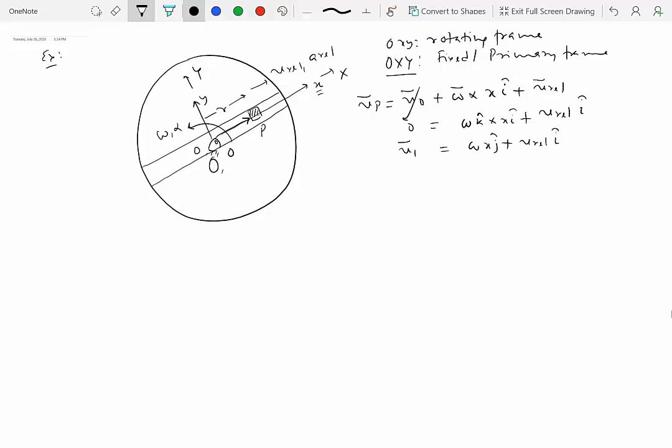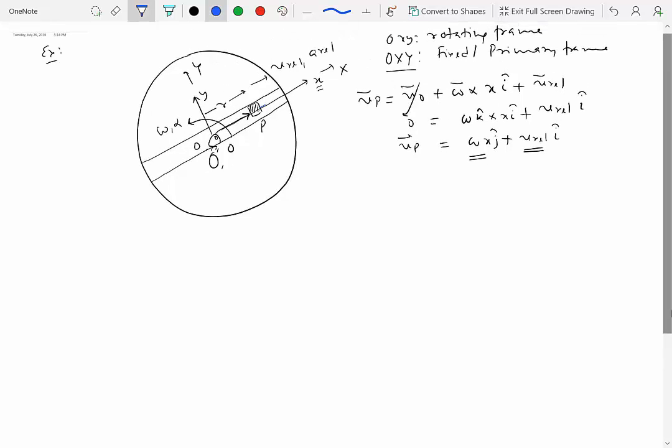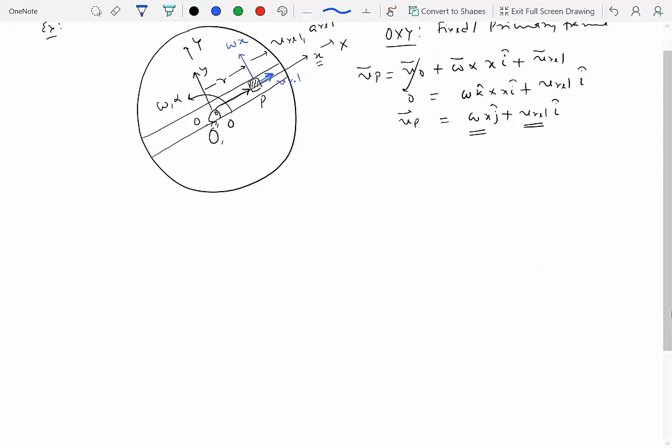So the velocity of P as seen in an inertial or fixed or primary reference frame has two components. One is along X direction that is due to the sliding and the other is along j direction which is omega X. So if I were to show these, this will be the direction of V relative which we already shown before and this is omega times X. So velocity has two components.